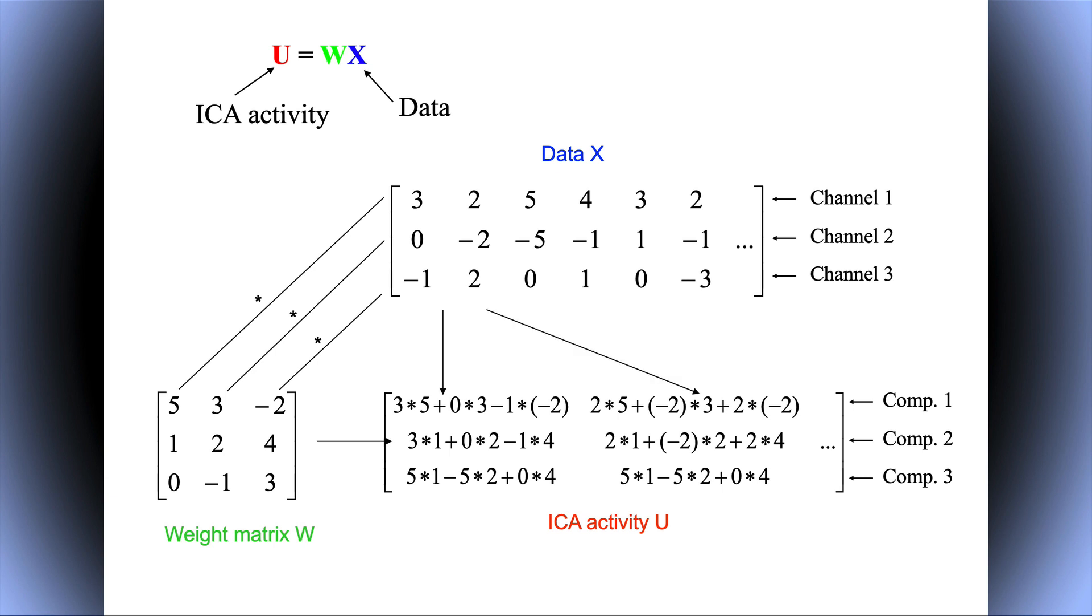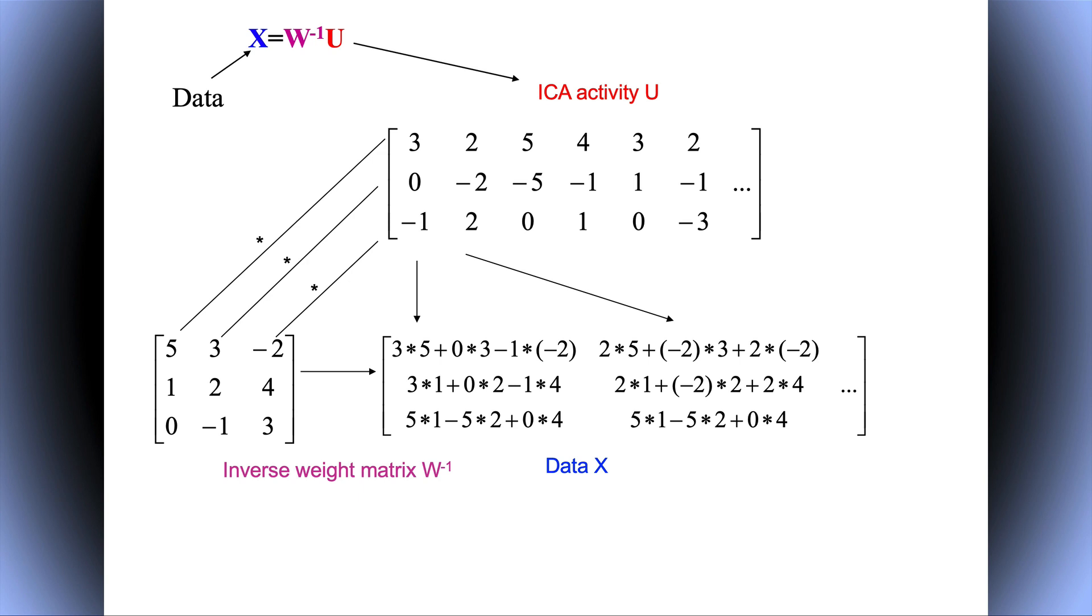If you want, you can also do the inverse. You can calculate the data from applying the inverse weight matrix to the ICA activity. What's interesting here is if we look at the column of the inverse weight matrix, we get the scalp topographies. By zeroing out the ICA activity of some artifact or components, we can remove these artifacts from the EEG data. All the rest I showed you was about calculating this weight matrix and inverse weight matrix. Once you've done that, it's very simple matrix multiplications.